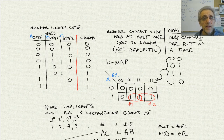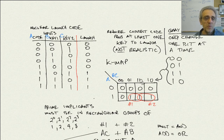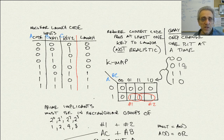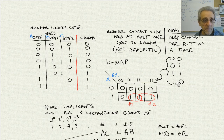I forgot to mention gray code. Along the top here, you would think binary numbers would go 0,0 then 0,1, but this is not binary — we're going to use gray code. In gray code, the rule is you can only change one bit at a time. So going 0,0 then 0,1 — now we can only change the left bit, so that's 1,1, and then we change the right bit, so that's 1,0. This is gray code, and that's how the Karnaugh map is required to be.